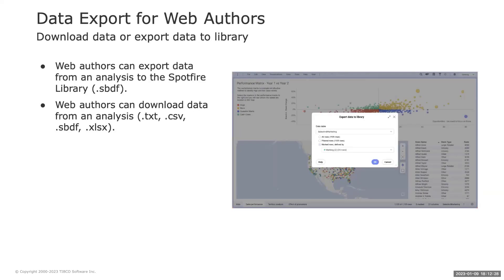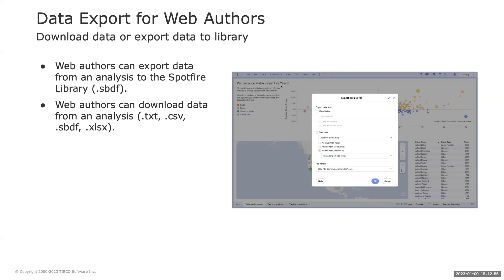With Spotfire 12.2, we are bringing data export capabilities to web authors. Exporting data to file or to the library, previously available only in the desktop client, is now available in the web client as well. Web authors can now export data from a Spotfire analysis to the library as an SBDF file, which stores data and metadata, or download it locally as a text file, CSV, SBDF, or Excel file.